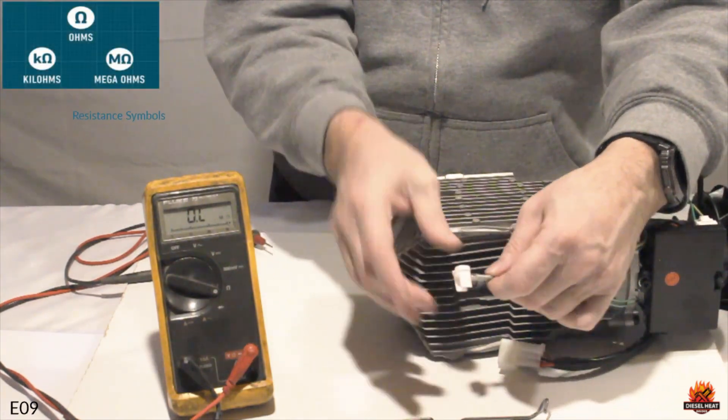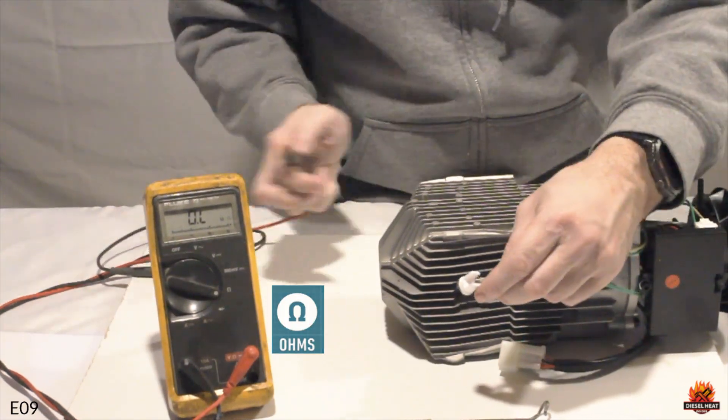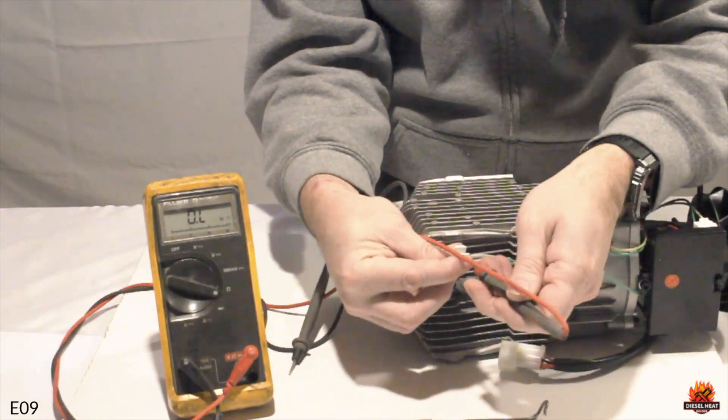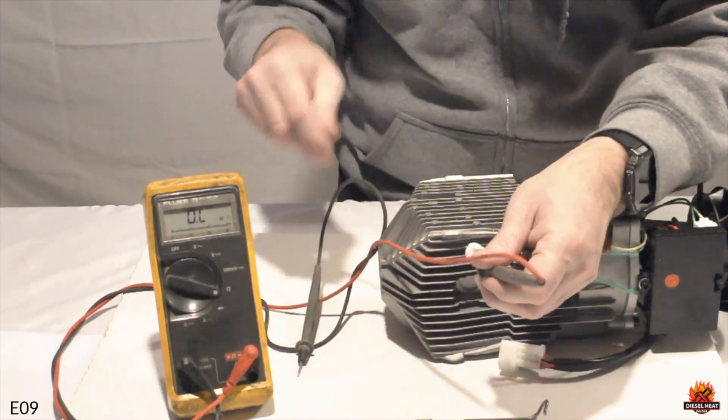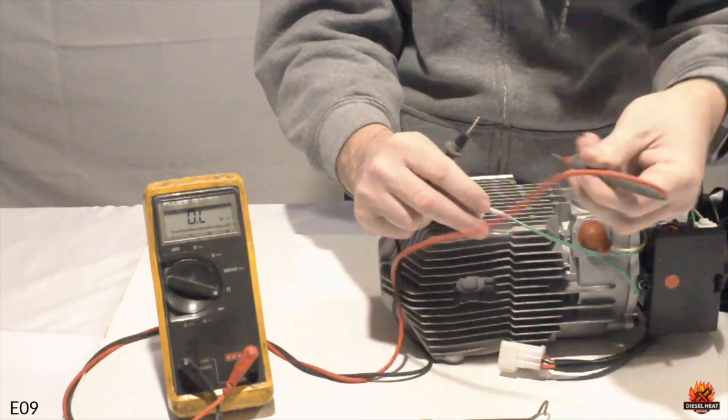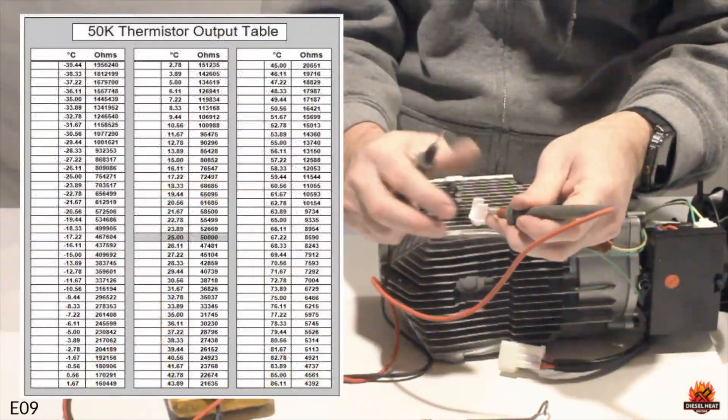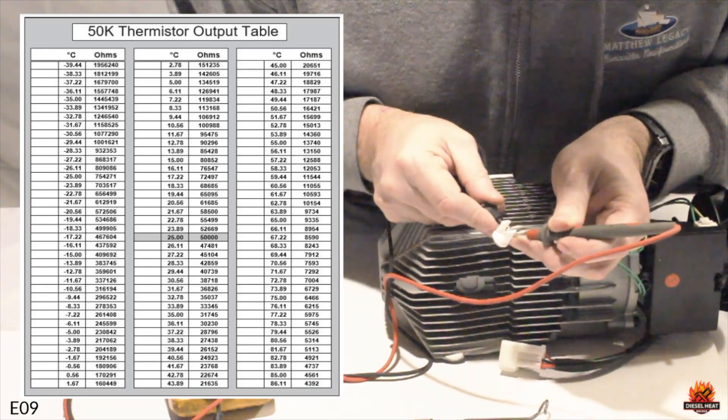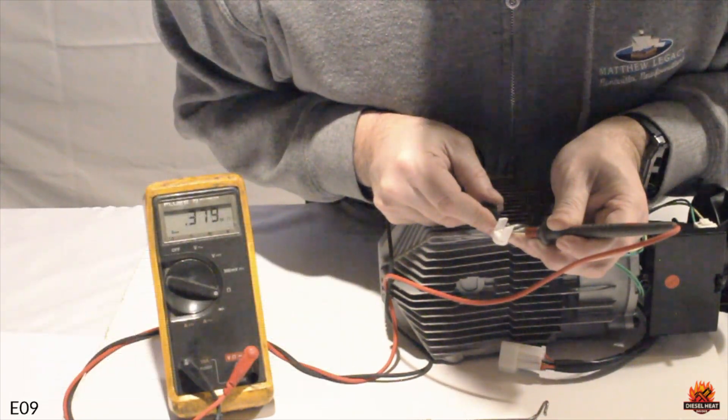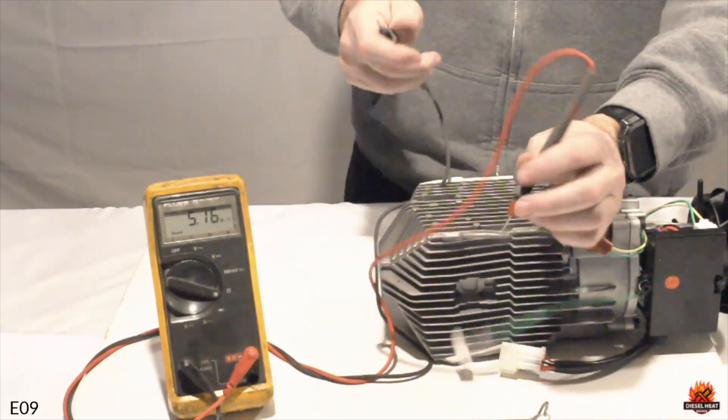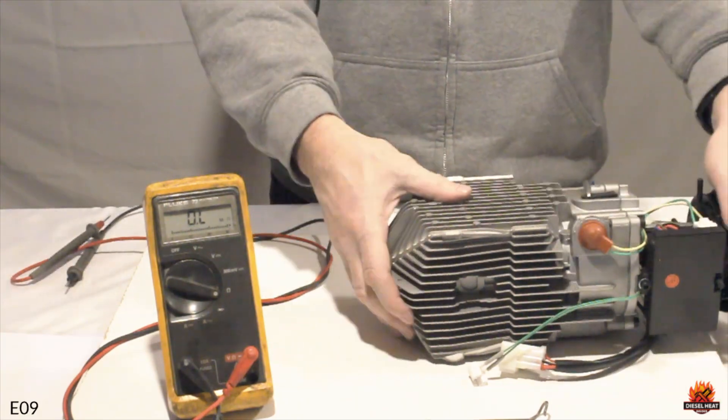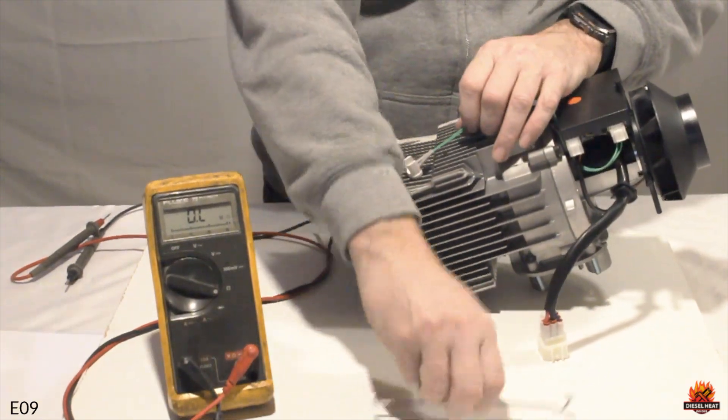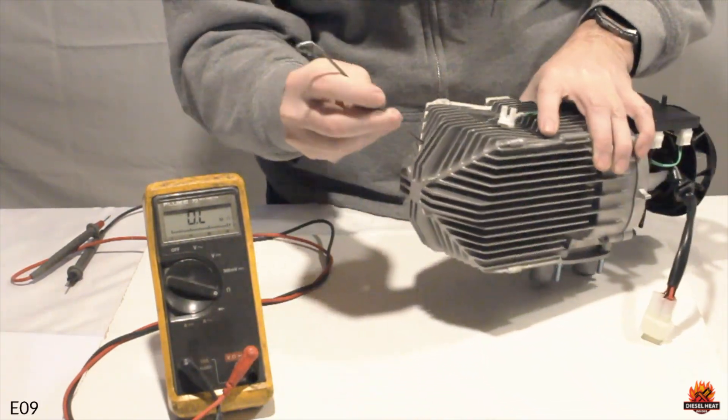We can use a multimeter to check the sensor out. If it isn't working properly, it should read around 1000 ohms. Please refer to the supplied reference on screen for proper working readings, based on your ambient temperature. Have patience when placing the flame sensor support bracket back. It can be tedious work.